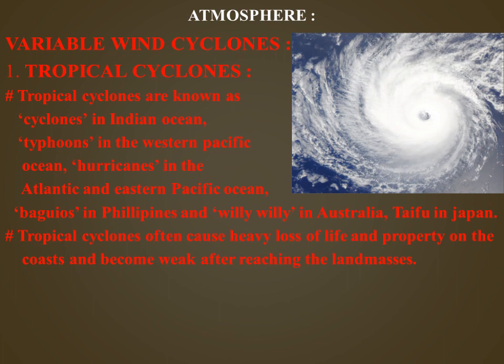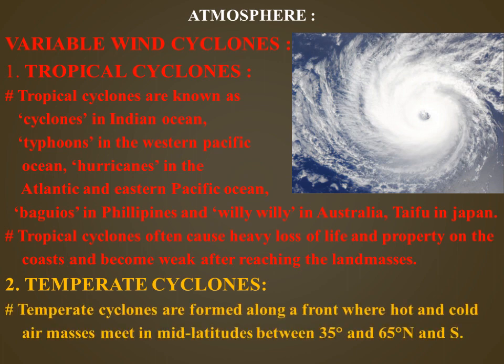Next we are going to learn about temperate cyclones. Temperate cyclones are formed along a front where hot and cold air masses meet in the mid-latitudes between 35 degrees and 65 degrees north and south.